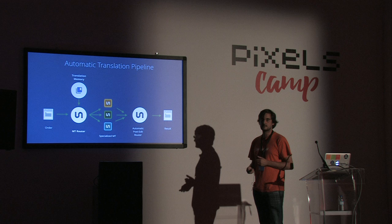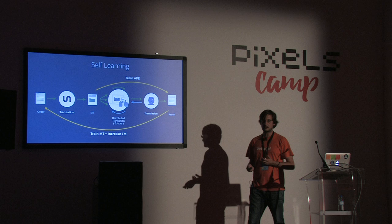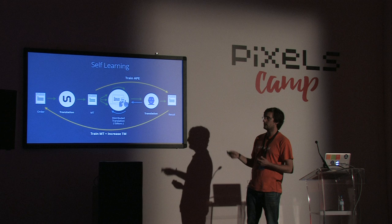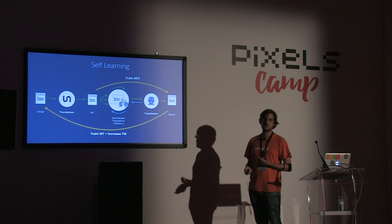Then we send the text to the human crowd. This is pretty cool because the more words that pass through Unbabel, the better we get — it's a self-fulfilling loop. We have a text, we do machine translation, a human corrects it, and we get extra data to train the machine translation and extra data to train the automatic post-editing.